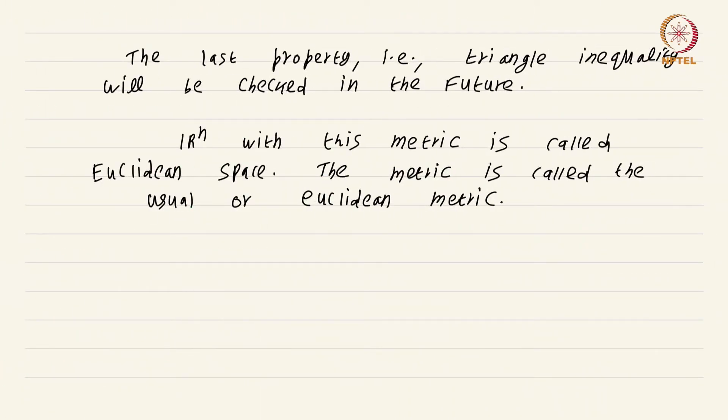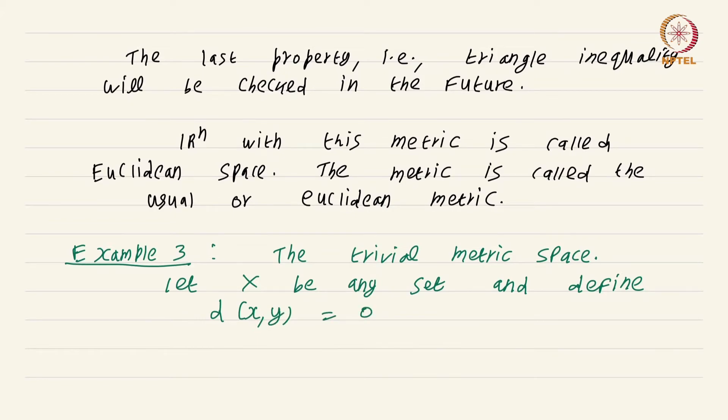The next example is really trivial, but it is very useful when you have some conjecture in mind and you want to get a quick counterexample for this conjecture. This is called the trivial metric space. This metric space is defined as follows. Let X be any set and define d(x,y) to be 0 if x equals y and 1 if x is not equal to y.